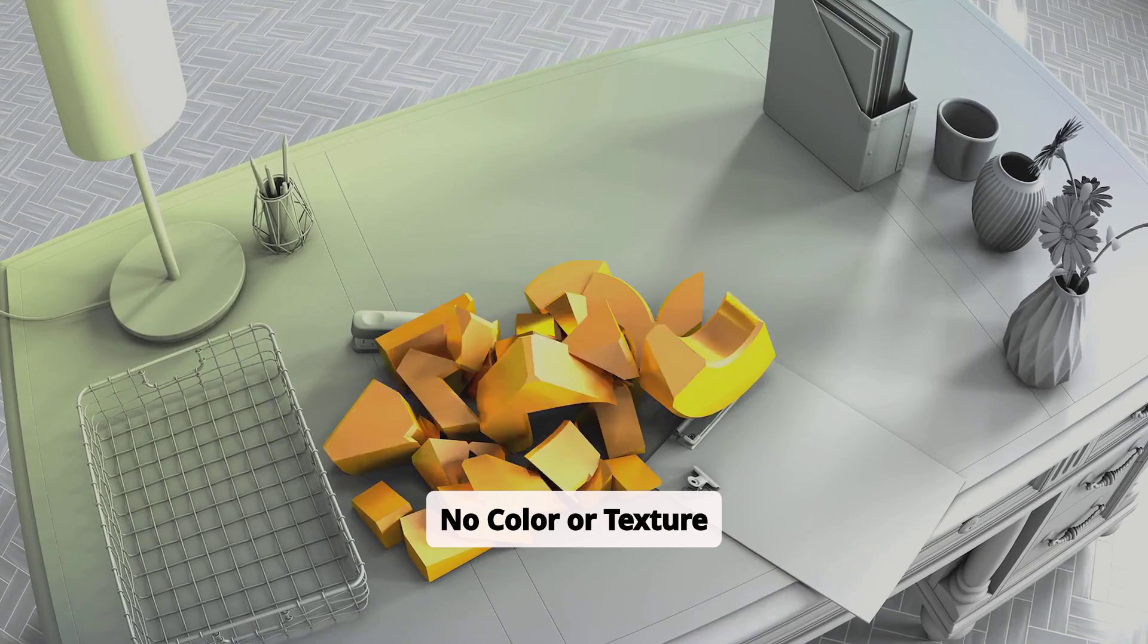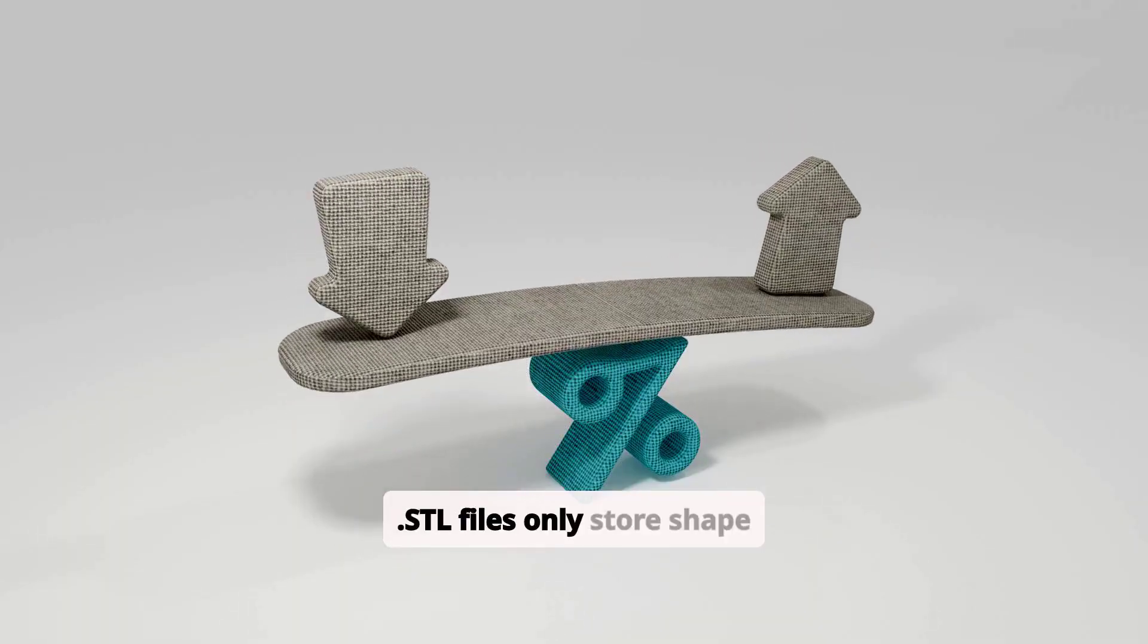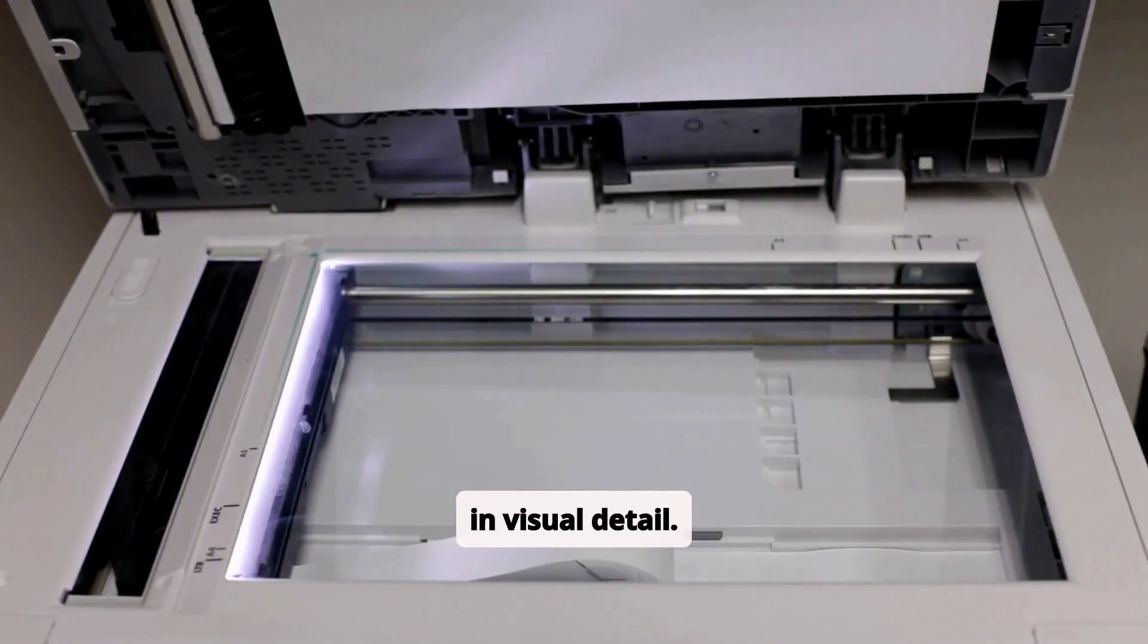No color or texture information. Unlike OBJ or GLTF, STL files only store shape data, making them lightweight but limited in visual detail.